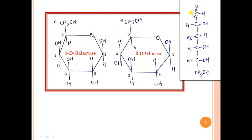When this linear structure is converted into the cyclic form, the carbon atom derived from this carbonyl carbon is called the anomeric carbon atom. In the cyclic structure of glucose as well as galactose, carbon atom number 1 is derived from this carbonyl group, and therefore carbon atom number 1 is called the anomeric carbon atom.